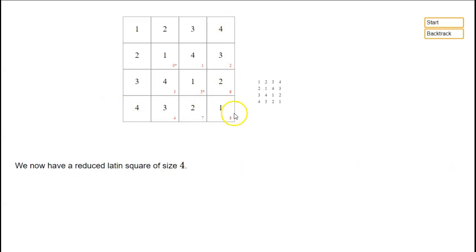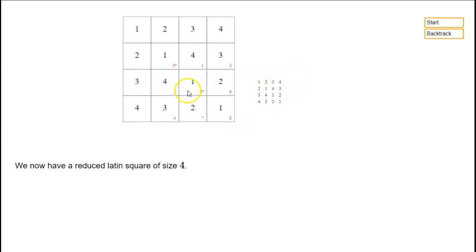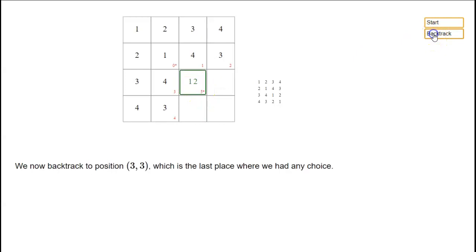So now we've completed the problem — we've got a reduced Latin square of size 4. That's one possibility. But remember, when we were at stage 5, we had a choice. We didn't have to put in a 1 there, so let's backtrack to there and try the other possibility.